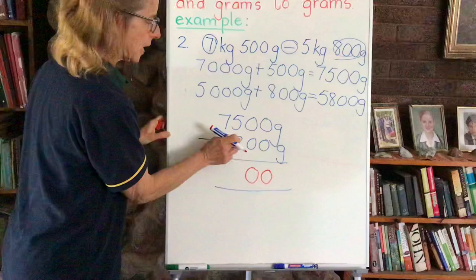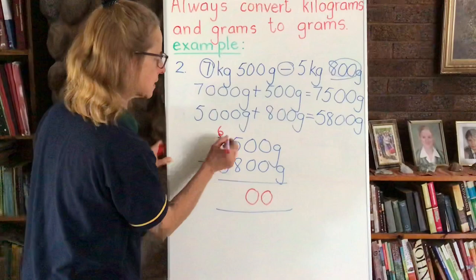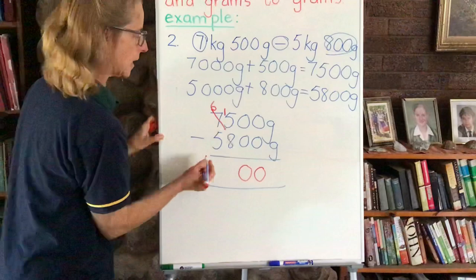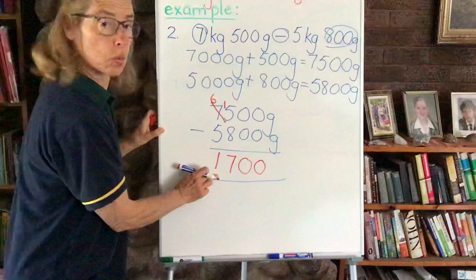Then you look at our 5 minus 8. We know that can't go - we have to borrow from our 7. That becomes a 6, and 10 goes here next to the 5 making 15 minus 8. 15 minus 8 is 7, and 6 minus 5 is 1. So we've got 1700 grams.